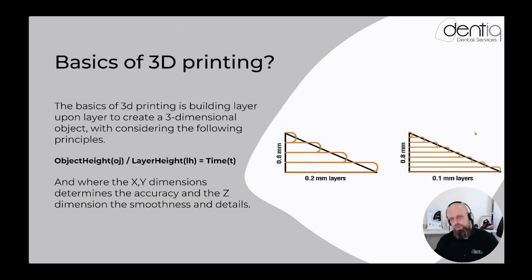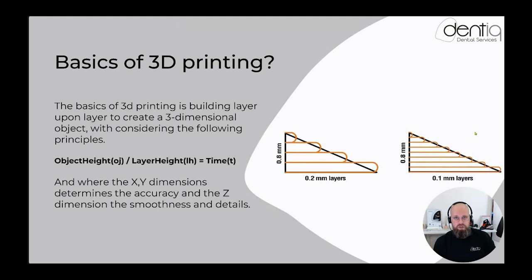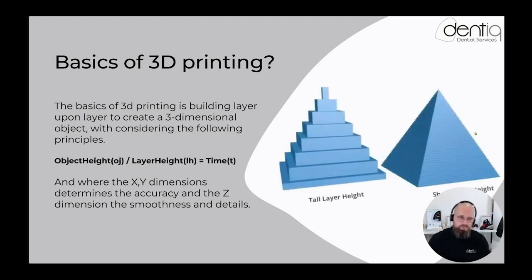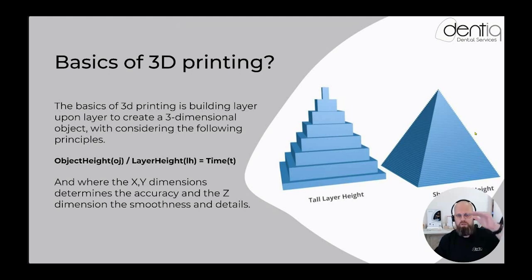Accuracy comes from two dimensions. On a printer, the X and Y accuracy is determined by how precise the pixels or the light source are. The Z dimension — the layer height — tells us more about smoothness and detail. Like a pyramid: with few layers you see large steps; with many fine layers the surface is nearly smooth and shows much more detail.